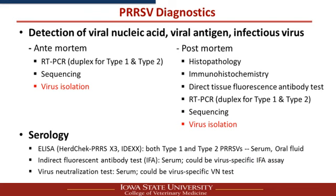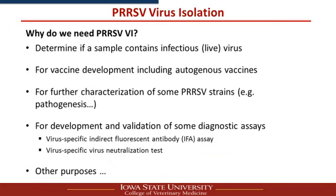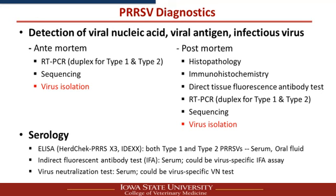There are several PRRS detection assays. Some are viral nucleic acid-based assays, for example PCR and sequencing. Some are viral antigen-based assays, for example immunohistochemistry and tissue FA testing. There are also assays to detect infectious virus, like virus isolation. And of course, you have serological assays such as ELISA, IFA, antibody testing, and neutralization tests to detect antibody.